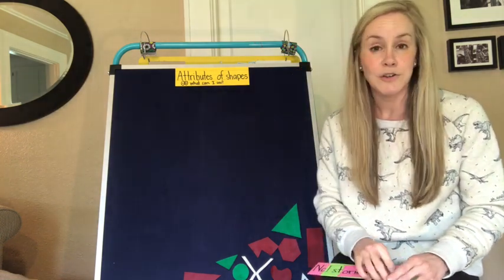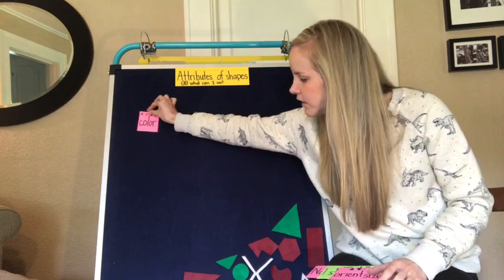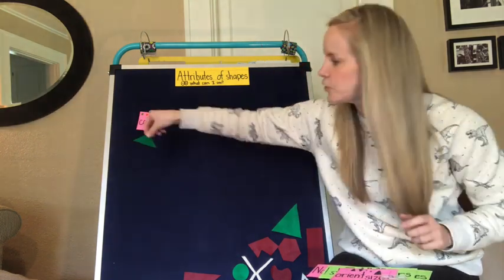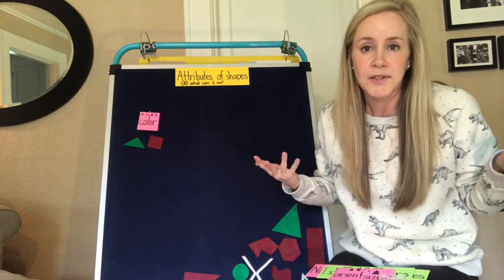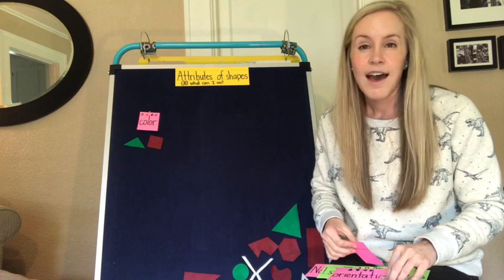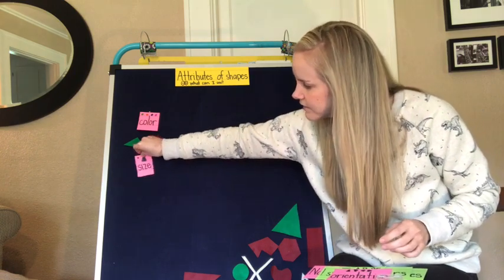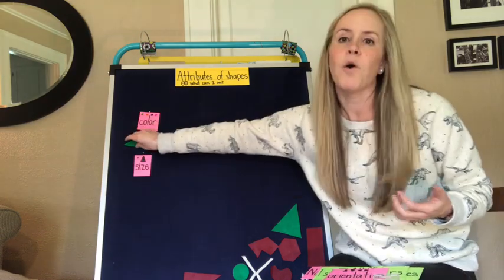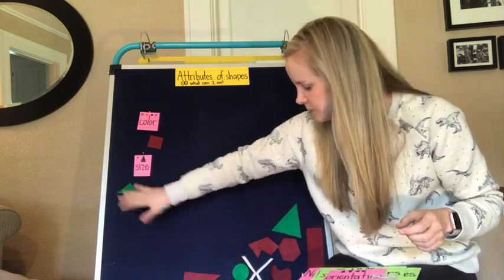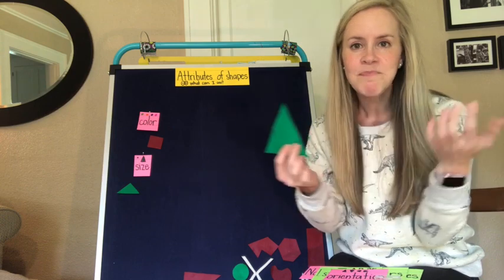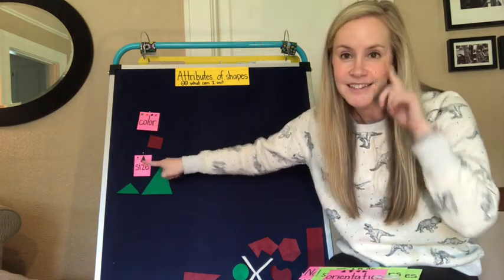One attribute that you can see about a shape is its color. For instance, right here I have a green shape and here I have a red shape, so those shapes have different colors, and that's an attribute because it's something you can see. Another attribute is size. This green triangle right here is small, so the size of that one is small, but this green triangle — same color — is large. So you can see color and you can see size of shapes.